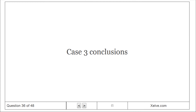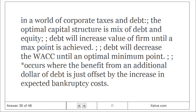Case 3 conclusions: In a world of corporate taxes and debt, the optimal capital structure is a mix of debt and equity. Debt will increase the value of the firm until a maximum point is achieved. Debt will decrease WACC until an optimal minimum point is reached, where the benefit from an additional dollar of debt is just offset by the increase in expected bankruptcy costs.